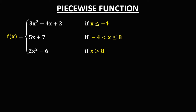For the first condition, x is less than or equal to negative 4. Since we have this equal to negative 4, negative 4 is part of the set, along with all numbers less than negative 4 — so negative 5, negative 6, negative 7, and so on.